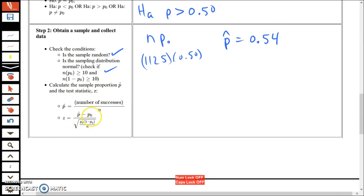Now the test statistic. It's p-hat minus p from the null hypothesis, so 0.54 minus 0.50. That's a 4 percentage point difference.